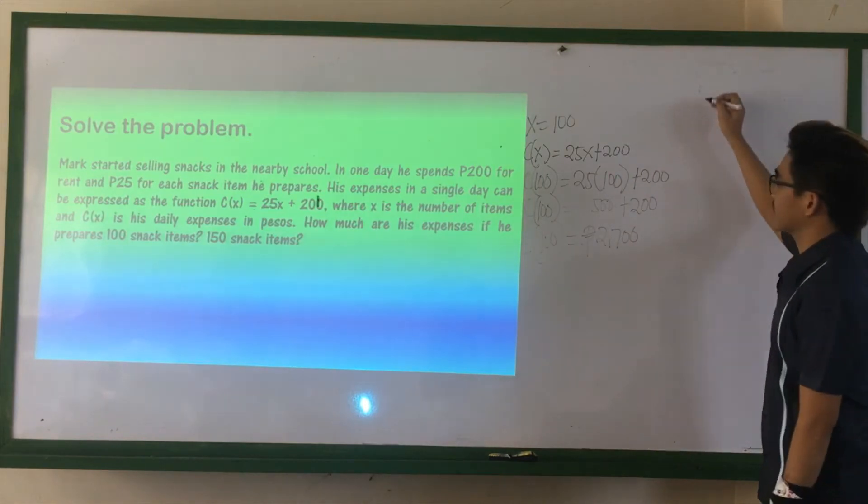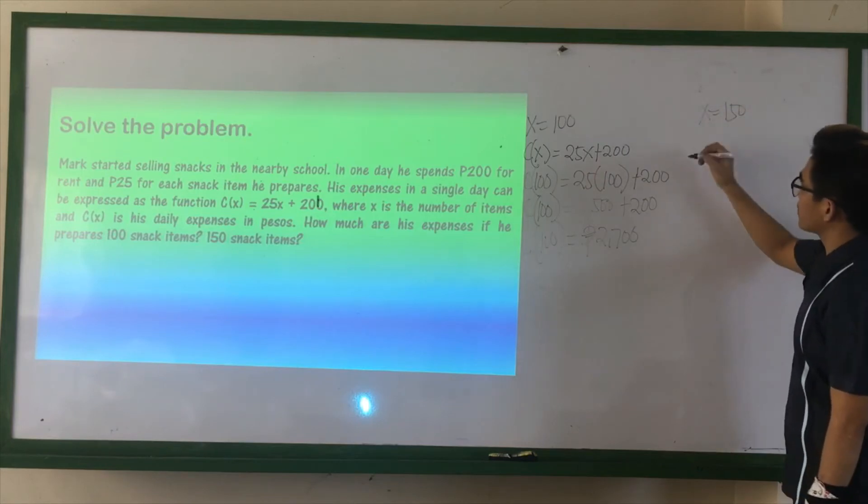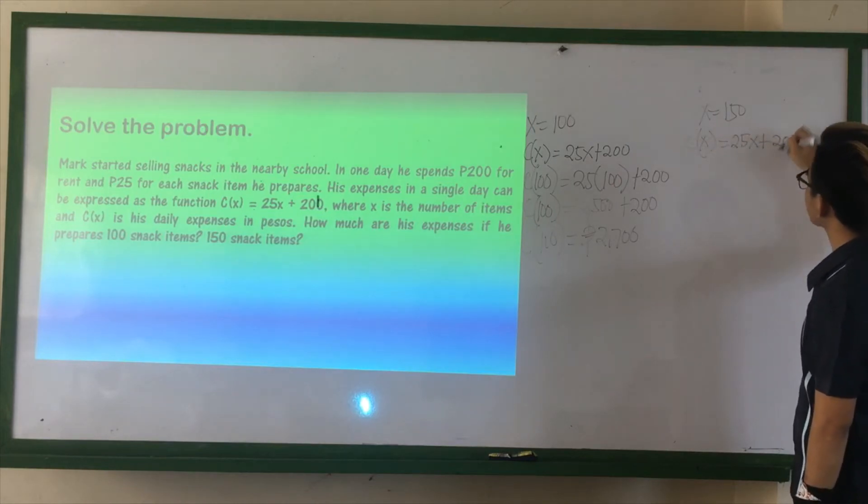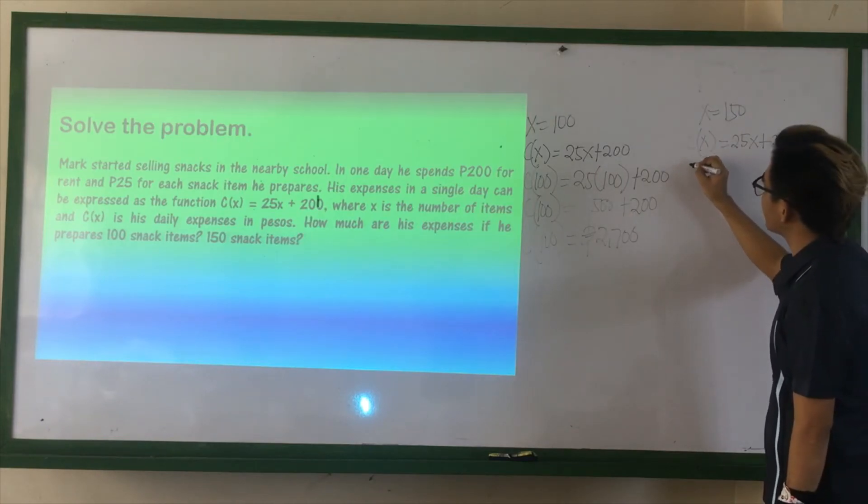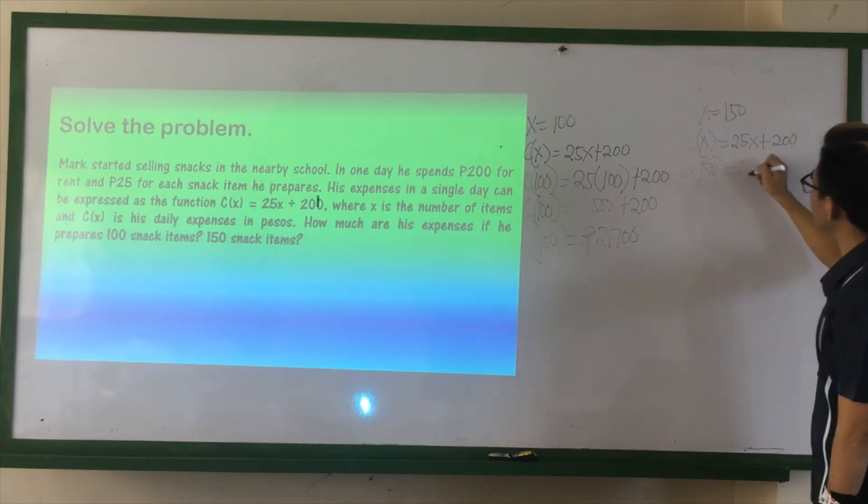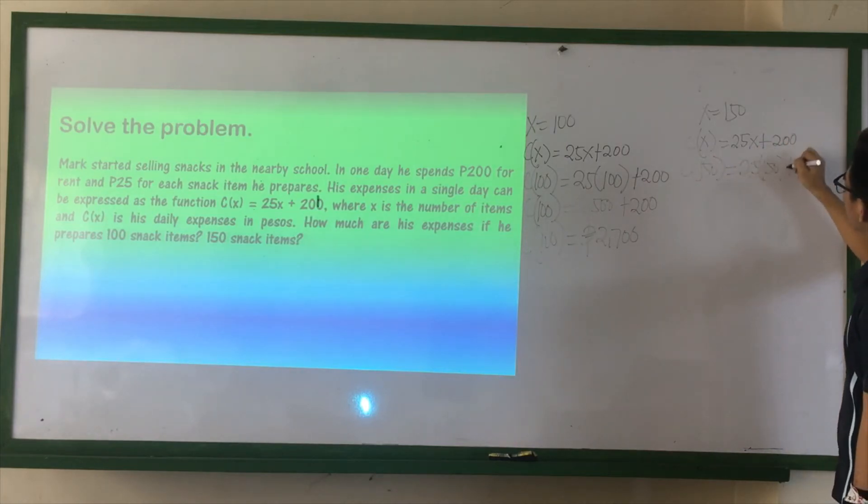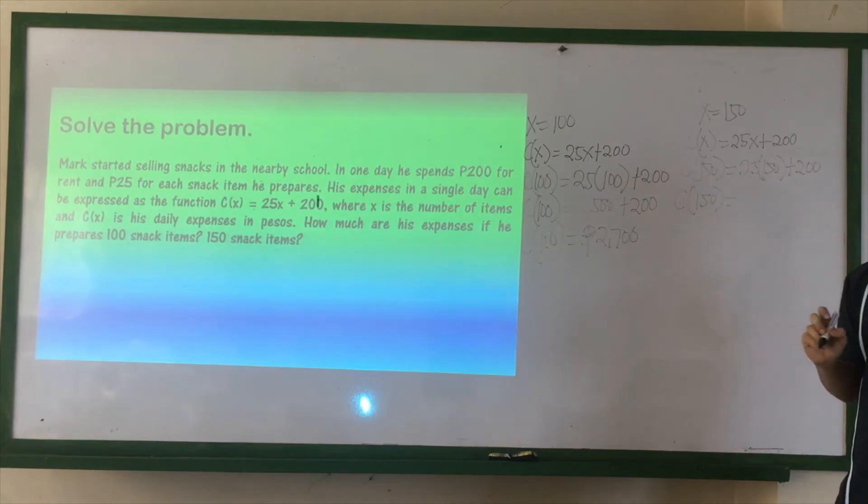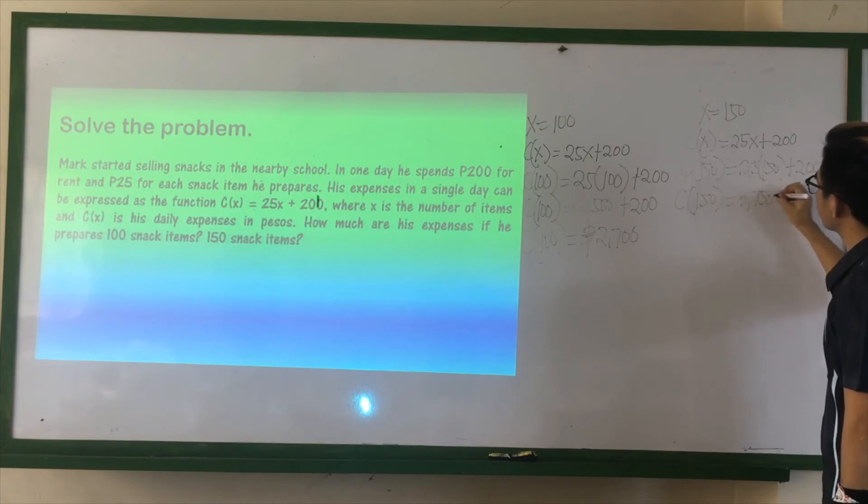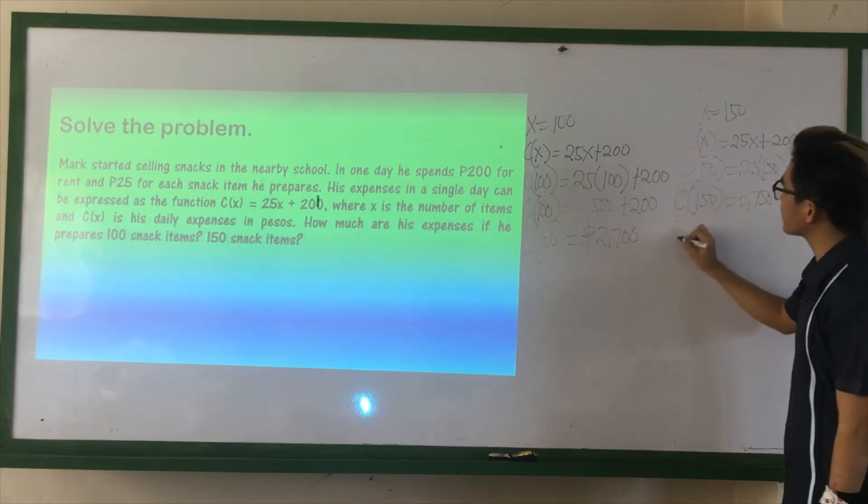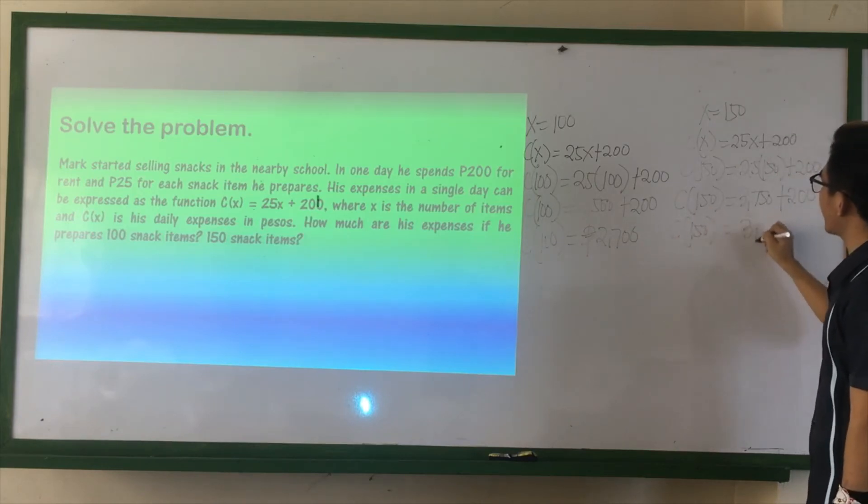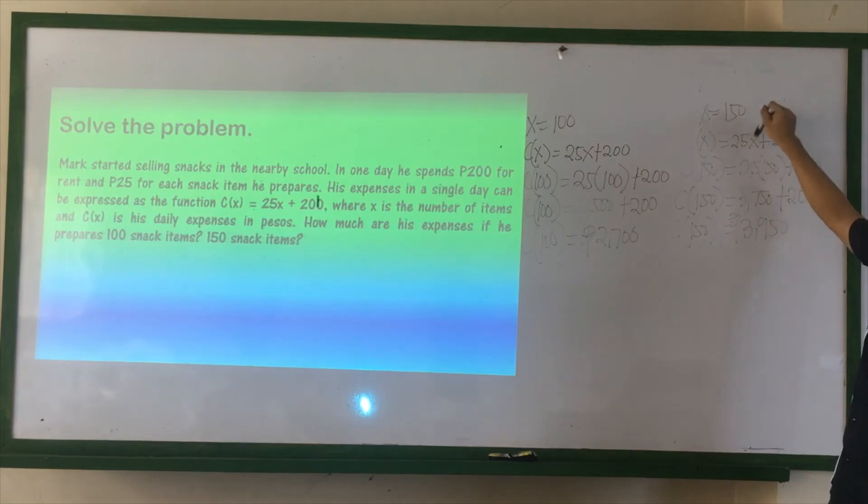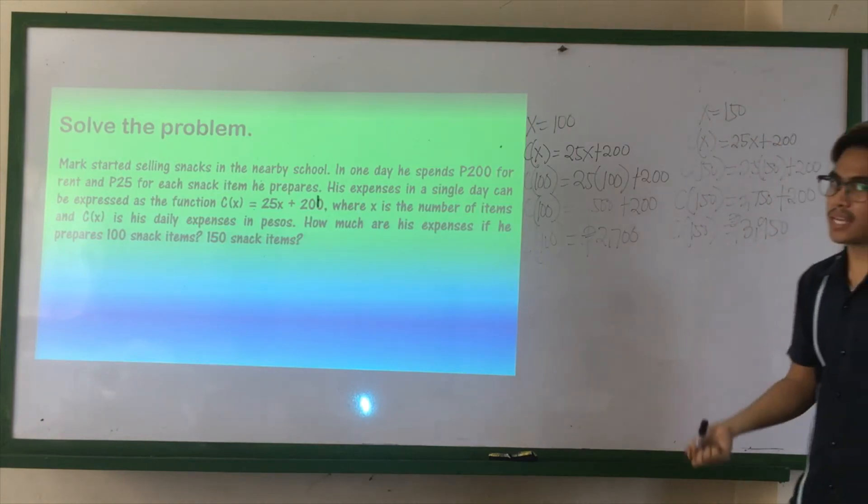How about 150 snack items? So, X equals 150. We simply copy again the function C of X equals 25X plus 200. We simply replace the value of variable. C of 150 equals 25 times 150 plus 200. So, we have C of 150, 25 times 150, that is 3,750 plus 200. So, the final answer is 3,950 pesos. If Mark prepares 150 snack items, he would spend 3,950 pesos.